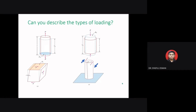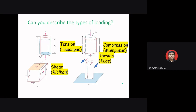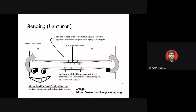Engineers determine the loading or external forces that act on a structure. When we apply external forces to a structure, internal stress or internal forces develop within the material to resist the outside forces. The opposition of external and internal forces is what holds the structure together. Once engineers know the loading on a structure, they calculate the resulting internal stress and design each piece to be strong enough to carry the loading without breaking. There are five types of loading: tension, compression, shear, torsion, and bending.